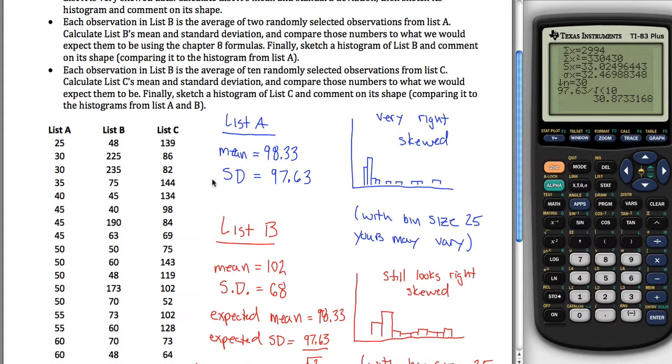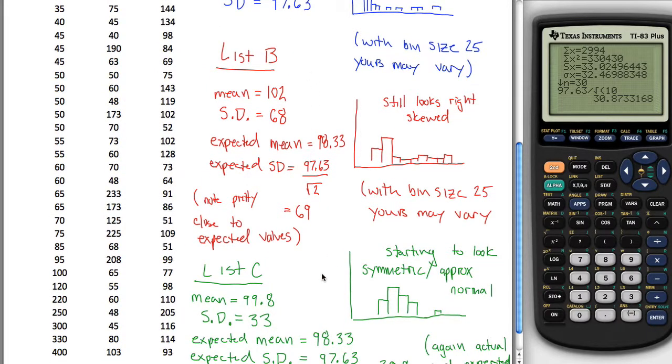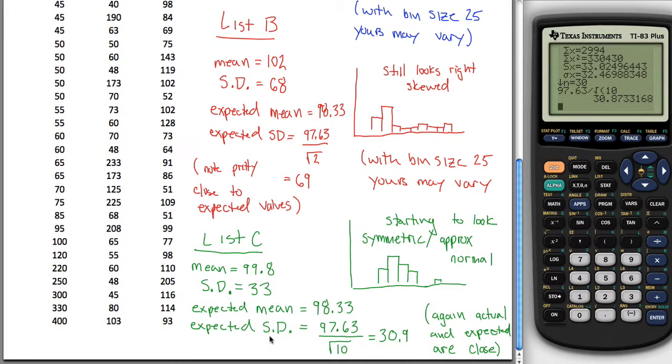And I think that's everything we wanted us to do, sketch the histograms, comment on its shape. Yeah, so that's the end of this practice problem, just kind of looking at the central limit theorem and how it affects the sampling distribution standard deviations and the shape of the sampling distributions.